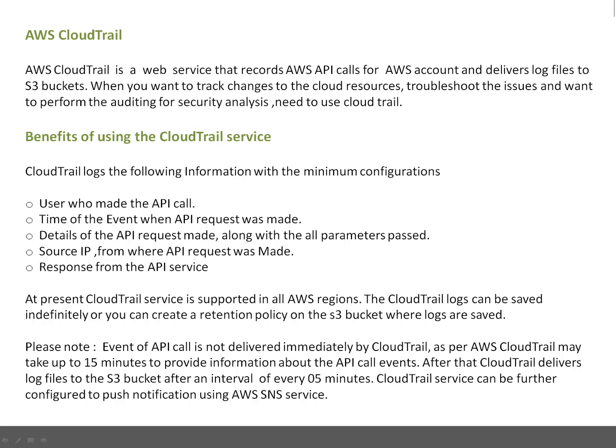You can also use CloudTrail when you want to troubleshoot issues. For example, if you are not able to start your EC2 instance, or not able to modify some permissions, and you want to know what is happening in the background — why you are not able to do things — that is troubleshooting. CloudTrail can help you debug what is happening. Or you can use it to perform auditing for security analysis, such as finding out who powered off your EC2 instance.